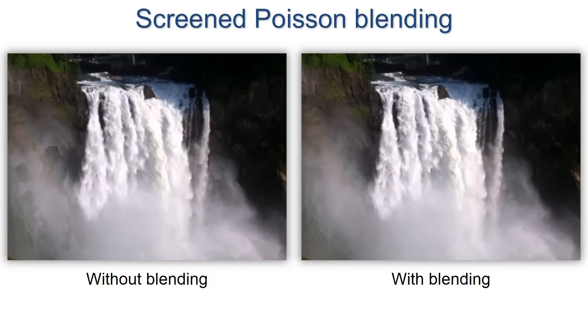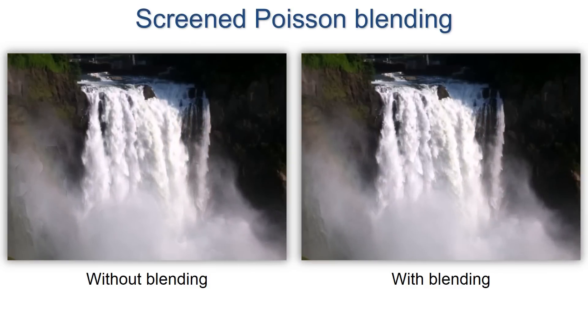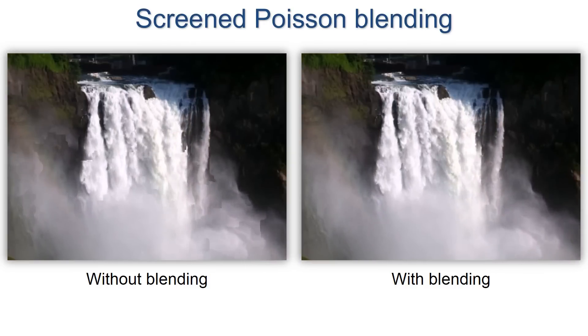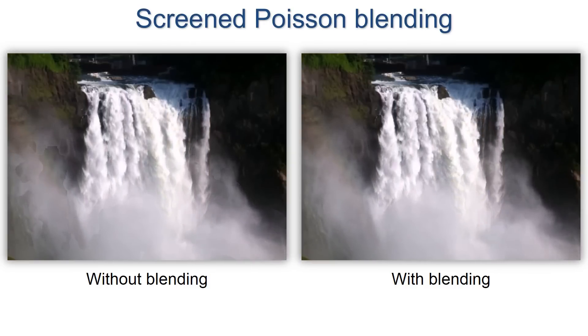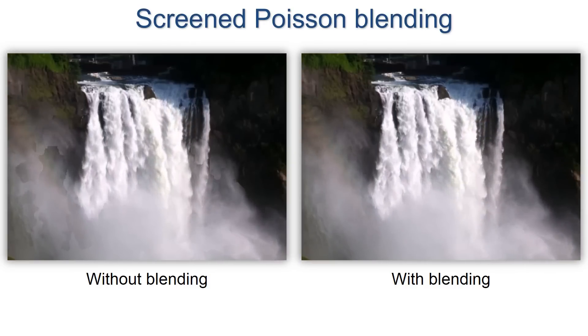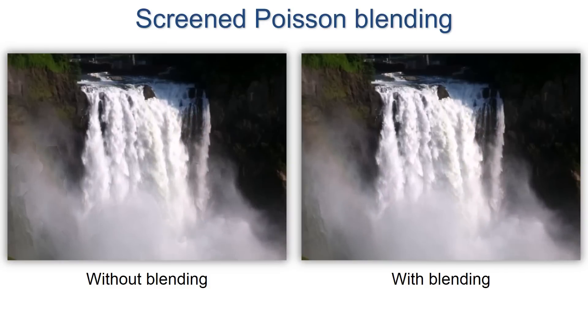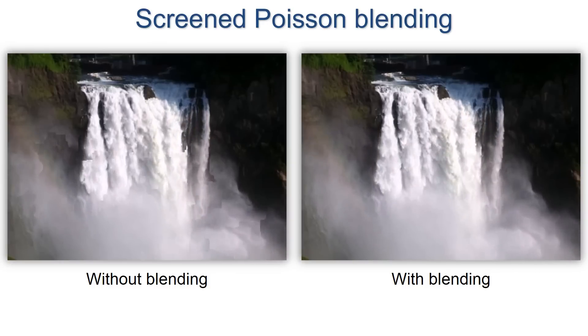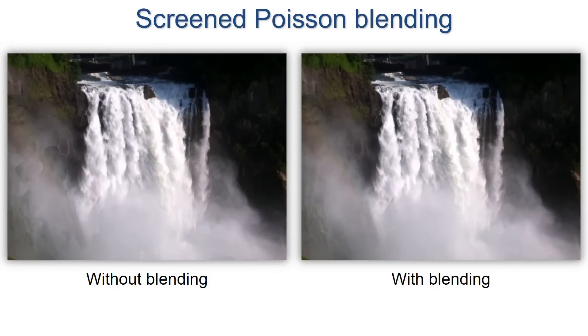Looping often cannot avoid spatial-temporal inconsistencies, visible as spatial seams and temporal pops. We apply screen-space Poisson blending to reduce these.